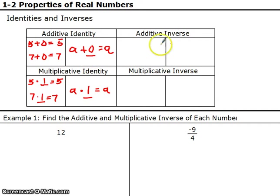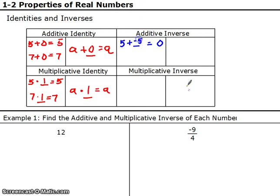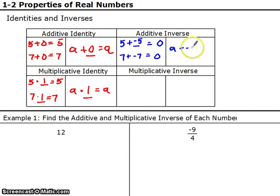You have to know those before you can do the inverses. The inverse says that if I add a number to this, it's going to equal the identity — for addition, that means it needs to equal 0. What number can I add to 5 so it equals 0? That's negative 5. What do I add to 7 to equal 0? Negative 7. So for any number A, you add negative A, and that's your additive inverse.